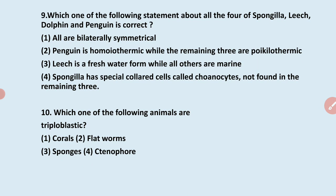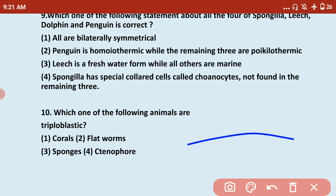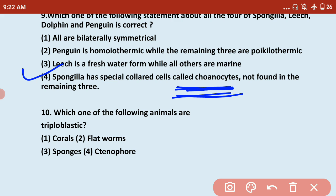Next: which statement about all four of Sycon, leech, dolphin, and penguin is correct? Options include: they are all bilaterally symmetrical; penguin is homeothermic while the remaining three are poikilothermic; leech is a freshwater form while all others are marine; or Sycon has special colored cells called choanocytes not found in the remaining three. Sycon is a poriferan, leech is an annelid, dolphin and penguin are mammals. The correct answer is that Sycon has special colored cells called choanocytes, which is a special characteristic of Porifera not found in the other three animals.